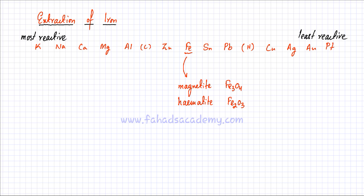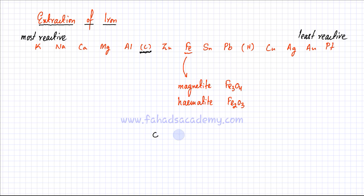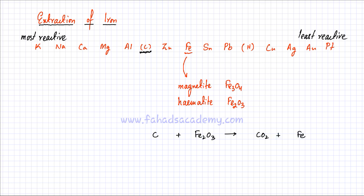Carbon is very cheaply available and carbon is more reactive than iron. So since carbon is more reactive compared to iron, it's going to displace iron from its compound. We just need to react carbon with Fe2O3 — let's take hematite. Carbon is going to take away all the oxygen, it's going to form carbon dioxide, and Fe would become uncombined iron as a metal. You just need to balance this equation. This method is called reduction with carbon.